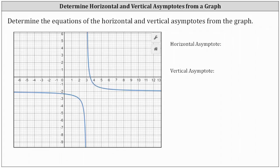Let's begin by sketching the horizontal asymptote for the graph. Notice how the graph approaches this horizontal line as the graph moves to the right and moves to the left — this horizontal line is a horizontal asymptote. Notice how it intersects the y-axis at negative two, so the equation of this horizontal line is y equals negative two.